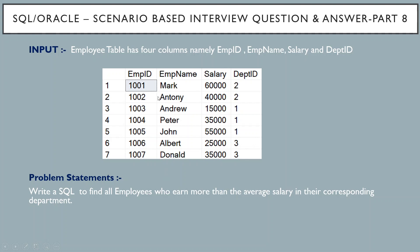If we go back to our main table, that is the employee table, we have the salary column. In order to solve this problem statement, first we need to calculate the average salary for each department ID. Once we have that, we have to display only those employee names whose salary is greater than the average salary for their corresponding department ID. Now let's see how we can solve this in SQL Server.